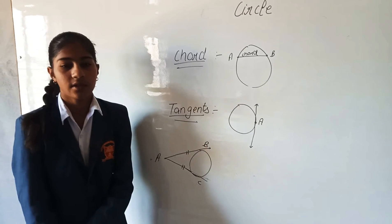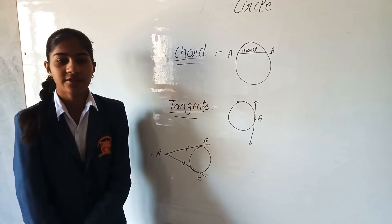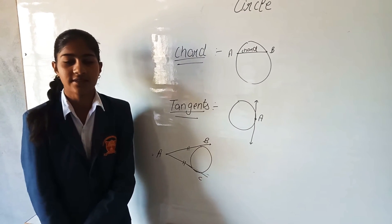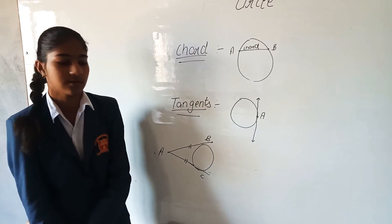Next is the circumference of the circle. The perimeter of a circle is known as its circumference.